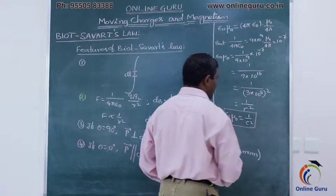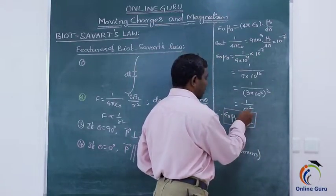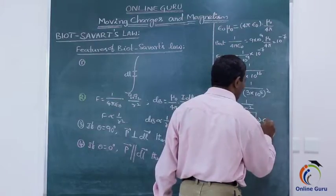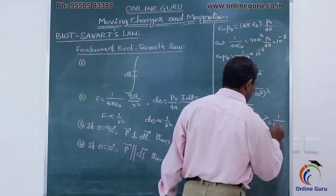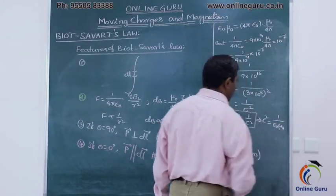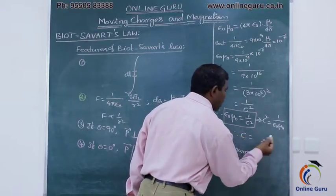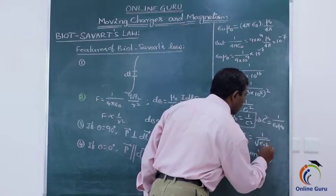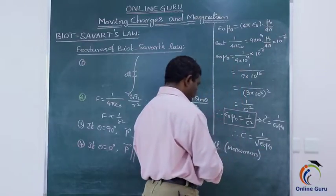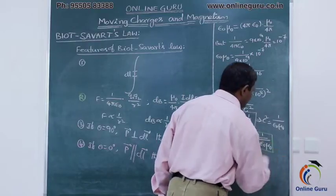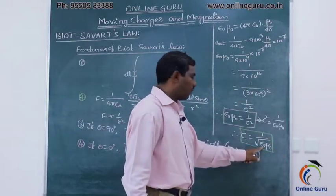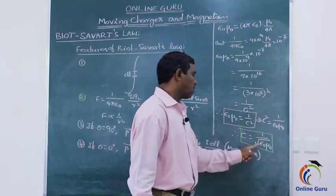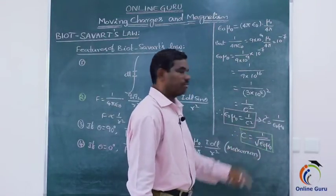From ε₀·μ₀ equals 1 by c², we can write c² equals 1 by ε₀·μ₀. Therefore, the mathematical equation for the speed of light is c equals 1 by root over ε₀·μ₀. This is the final expression for the speed of light in terms of the permittivity of free space ε₀ and the permeability of free space μ₀. Thank you.